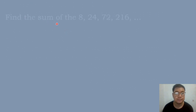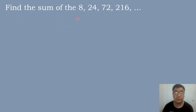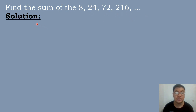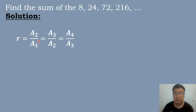Let's solve our first example. Find the sum of 8, 24, 72, 216, and so on. The first step is to find the value of the common ratio using the formula R equals A sub 2 divided by A sub 1, A sub 3 divided by A sub 2, and A sub 4 divided by A sub 3.